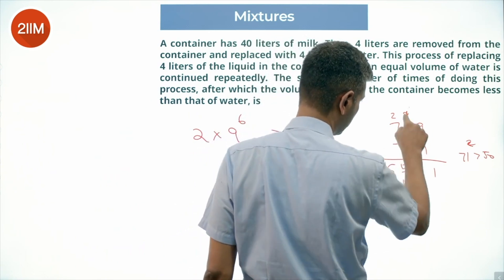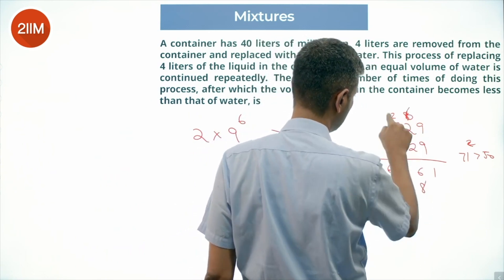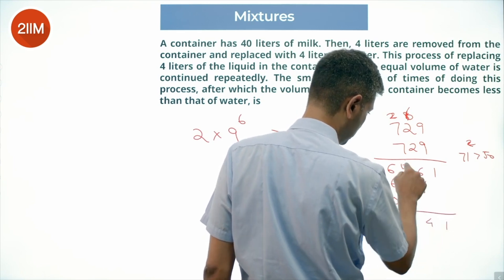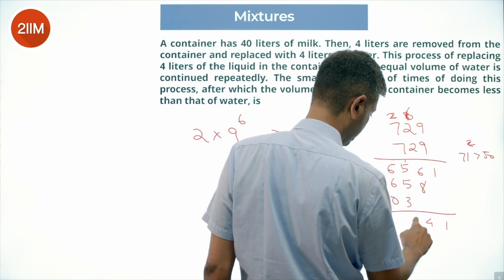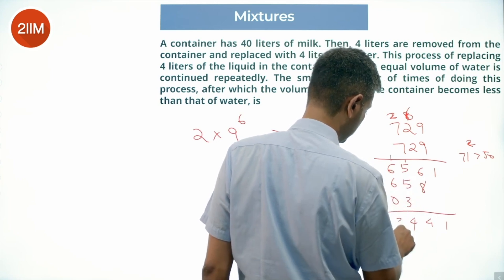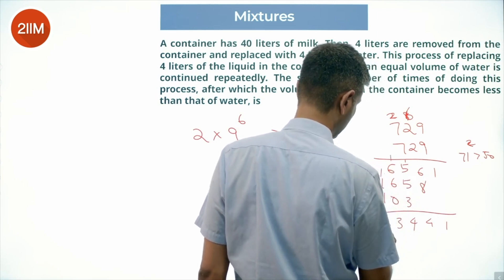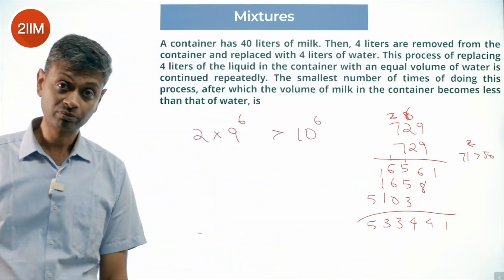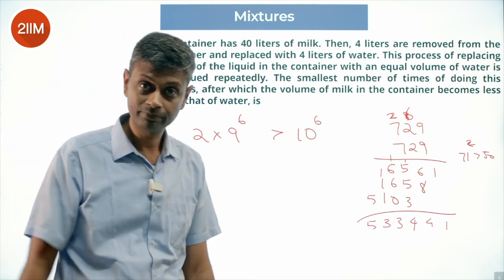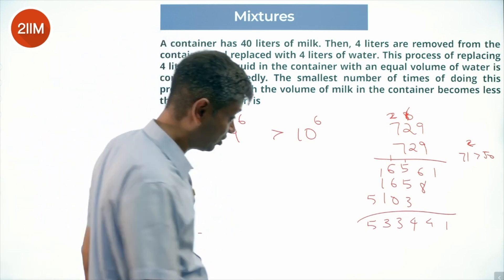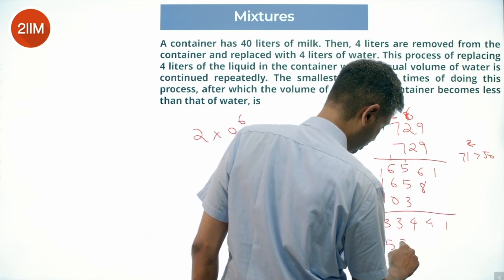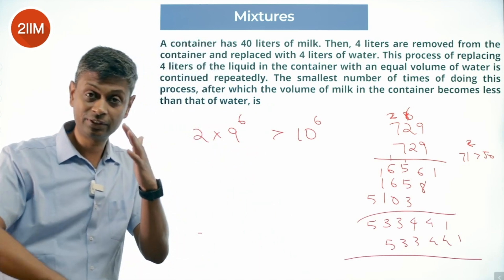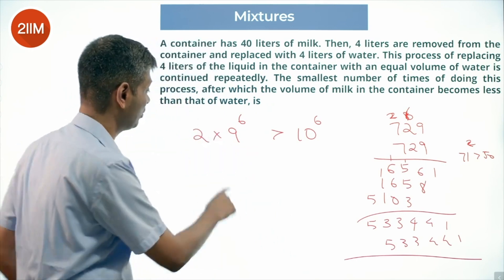Working through the multiplication of 729 × 729 and then multiplying by 0.9 to get 9^7. After doing this arithmetic, we are subtracting from the result and it will become less than 50 — less than half. So 7 will work.